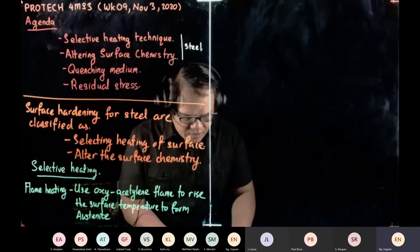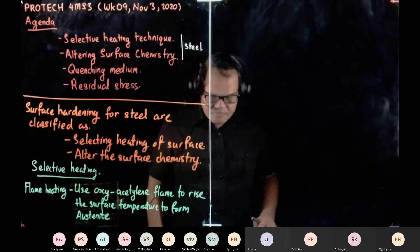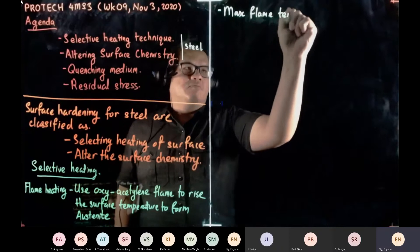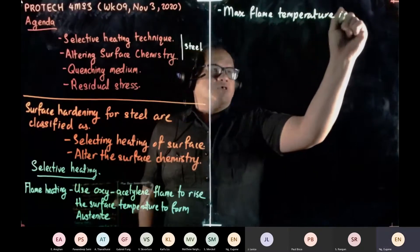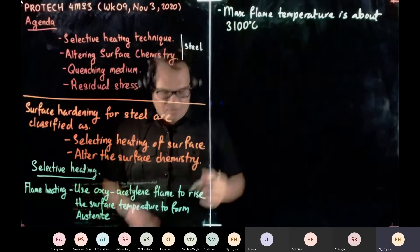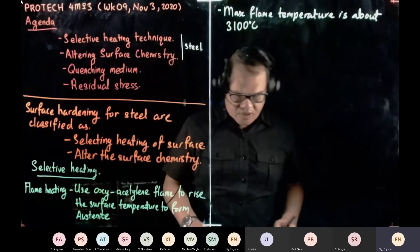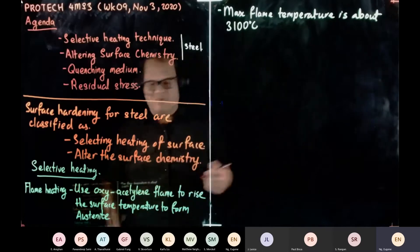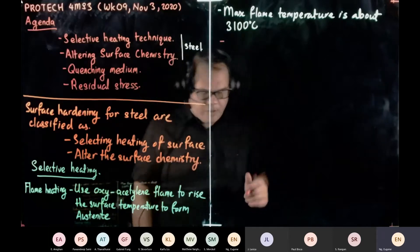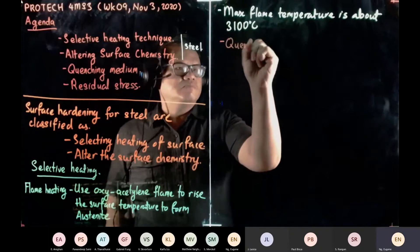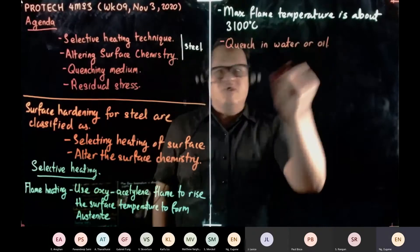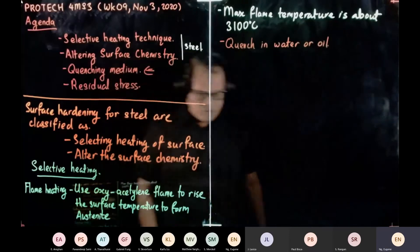The maximum flame temperature for the oxy-acetylene torch is about 3,100 degrees C. The heat is very high but very focused in a small area. After heating, we quench in water or oil — we'll talk about quenching medium later — to form martensite.